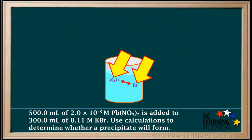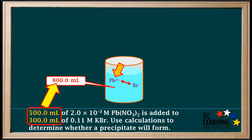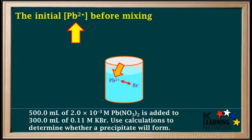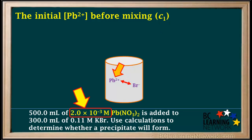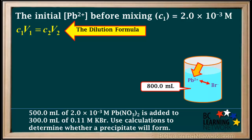In order to calculate the trial KSP, we need to find the concentrations of Pb²⁺ and Br⁻ in the new mixture. The source of Pb²⁺ ions was the 500 milliliters of 2×10⁻³ molar Pb(NO₃)₂. When it was mixed with the other solution, the Pb(NO₃)₂ solution was diluted from 500 milliliters to 800 milliliters. We use the dilution formula: C₁V₁ = C₂V₂, where C₁ and V₁ are initial concentration and volume.